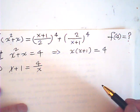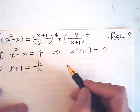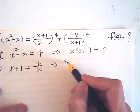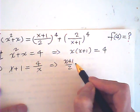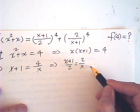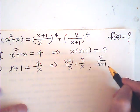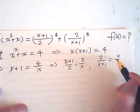Then this means (x plus 1) over 2 is 2 over x, and 2 over (x plus 1) is equal to x over 2.